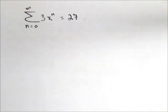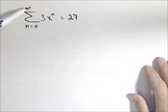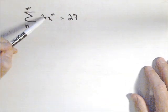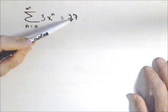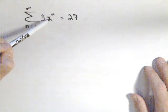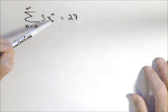So we have an interesting problem here. We have the summation from n equals zero to infinity of three times x to the n equals 27. So basically, we have a geometric series here, we just don't know the common ratio. So x is the common ratio, it's what we're trying to find.